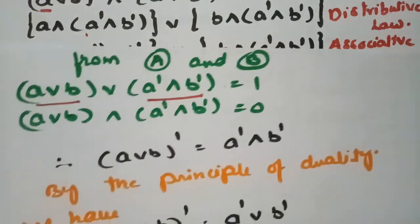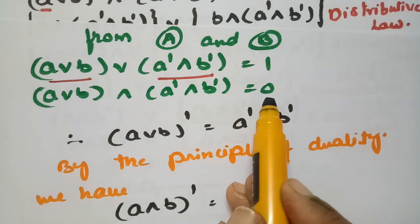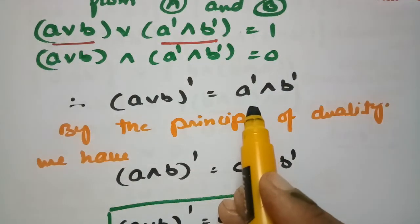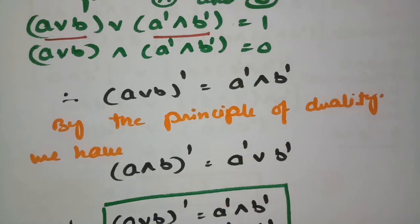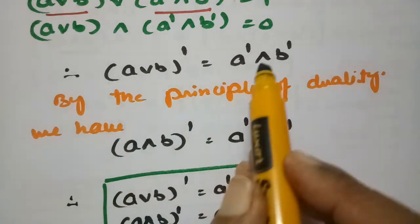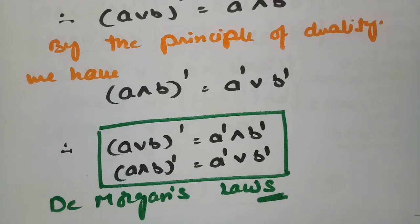From equations (1) and (2), the join equals the greatest element and the meet of these two equals the least element. Therefore (A∨B)' = A'∧B'. By the principle of duality, (A∧B)' = A'∨B'. These are De Morgan's laws, and they hold good for a complemented distributive lattice. Please practice this — it's very easy once you follow through. If you like the video, leave a comment, give a thumbs up, and share with your friends. Thank you.